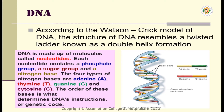The four types of nitrogen bases are adenine, thymine, guanine, and cytosine. The order of these bases is what determines the DNA's instructions or genetic code.